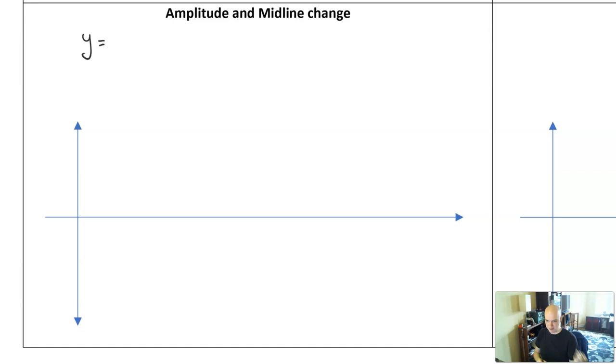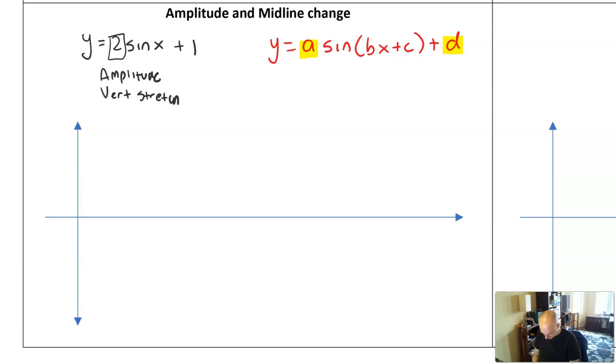So let's explore a graph that has an amplitude and midline change. So the general format for these graphs is y equals a sine or cosine bx plus c plus d. And what we have here is an a value and a d value. Notice how those are all outside the parentheses. So these are going to be output transformations.